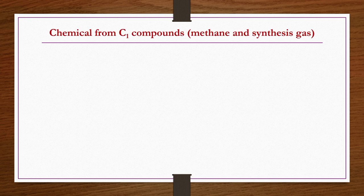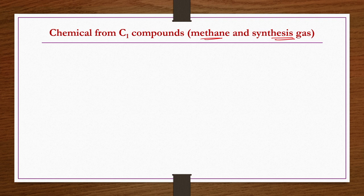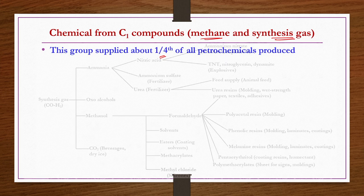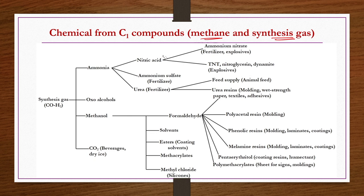We have grouped production of petrochemicals as: chemicals from C1 compounds (CO plus H2 and methane), chemicals from C2 compounds (ethane, ethylene, etc.), chemicals from C3 and C4 compounds, and chemicals from aromatics. Starting with C1 compounds: with synthesis gas CO and H2 as the basic C1 raw material, we try to produce different chemicals.